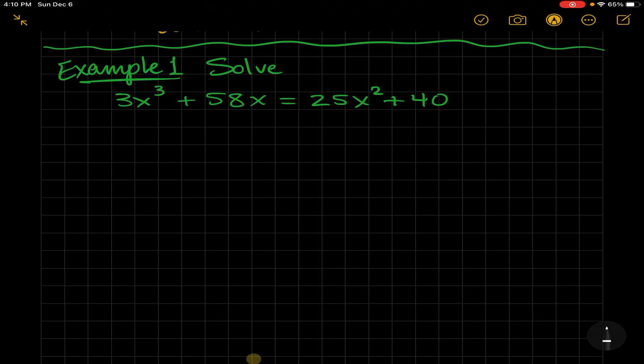When we move everything to one side, we want to put it in descending powers, so I'm going to put the 25x squared next and the 40 is our constant term. Make sure when you move stuff over you remember to change the sign because you do the opposite operation.